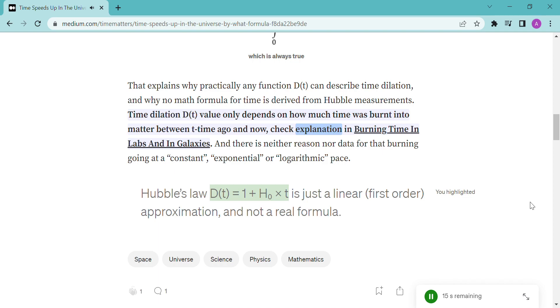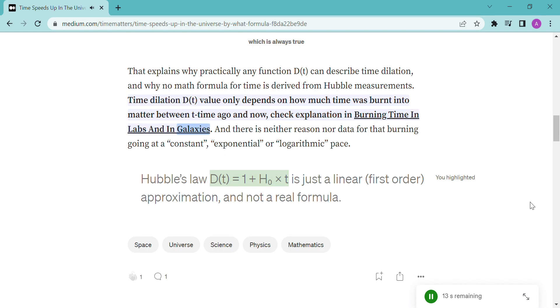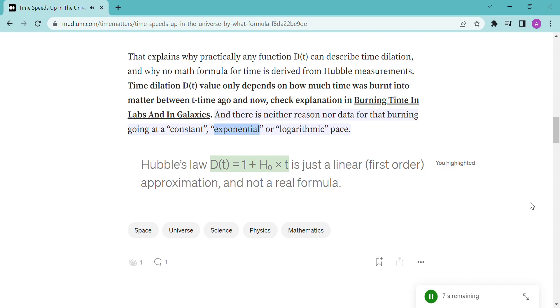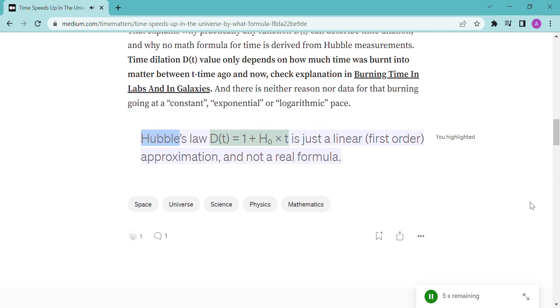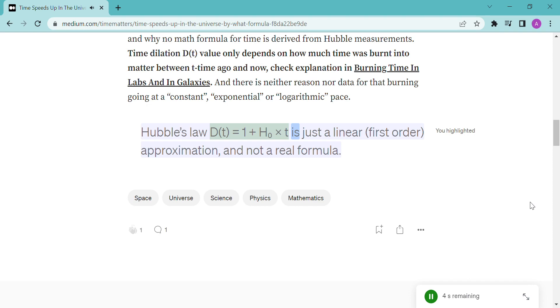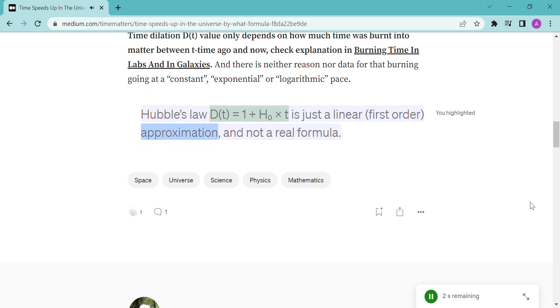Check explanation and burning time in labs and in galaxies. And there is neither reason nor data for that burning going at a constant, exponential or logarithmic pace. Hubble's law DT equals 1 plus H0 times T is just a linear, first order approximation, and not a real formula.